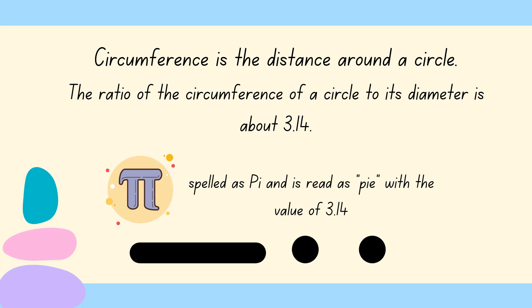So what is 3 and 14 hundredths? So it is pi. So this is the symbol of pi. Pi spelled as pi and is read as pi with a value of 3.14.